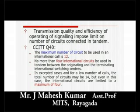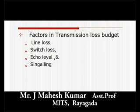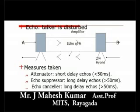Taking the guidelines of the above points, we have eight links available for national circuits, which implies a limit of 4 for each national network. National network designs should take these limits into consideration. The factors in the transmission loss budget are: line loss, switch loss, echo level, and signaling.